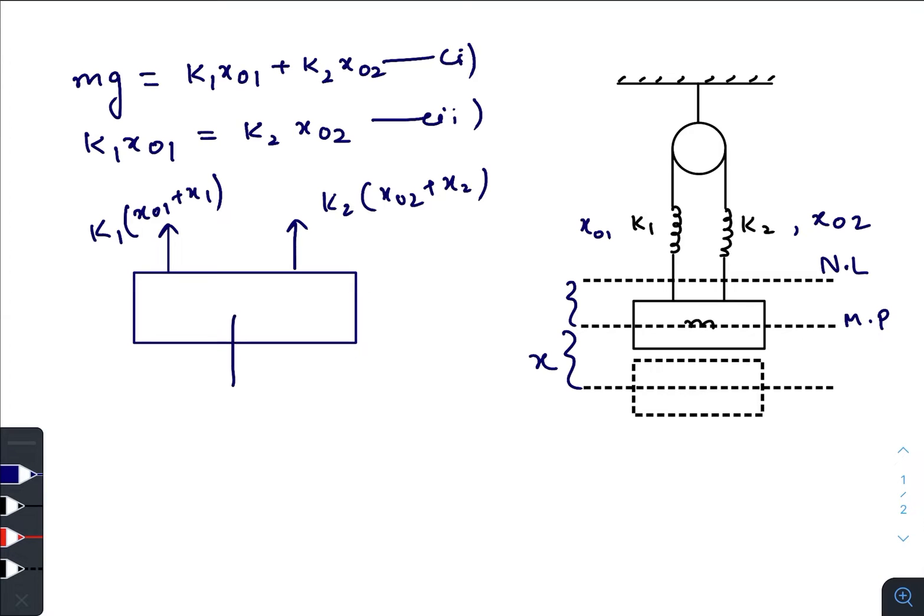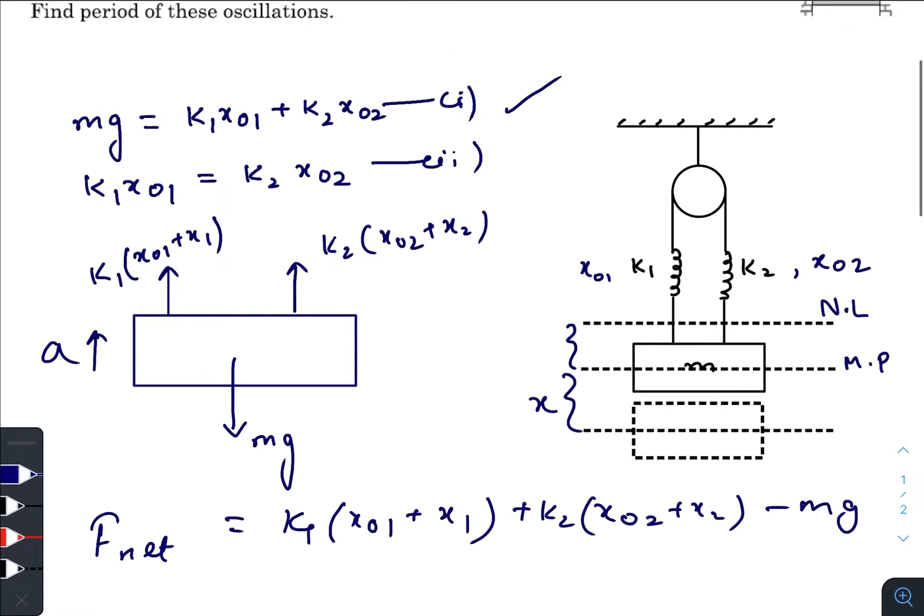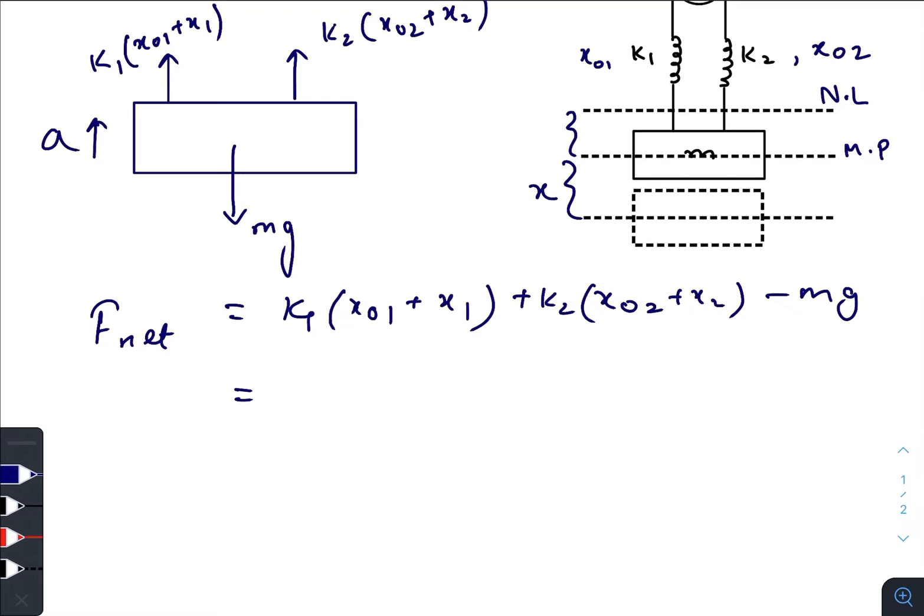There is one force due to gravity and the net acceleration is upwards, so F_net would be k₁(x₀₁ + x₁) + k₂(x₀₂ + x₂) - mg. Using the first equation, we can just cancel out k₁x₀₁, k₂x₀₂, and mg.